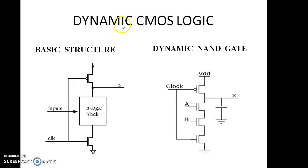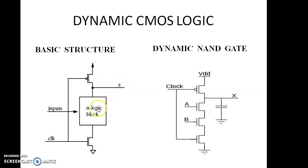First is dynamic CMOS logic. Here NMOS and PMOS are connected with a simple clock, and inputs are connected to this N logic block. From here we will get the output. Here we can implement any logic equations and any logic gates. This is the basic structure of dynamic CMOS logic.